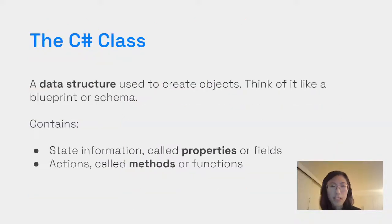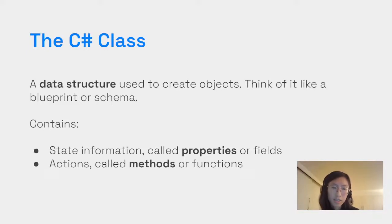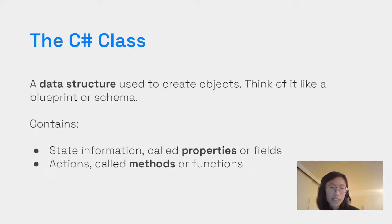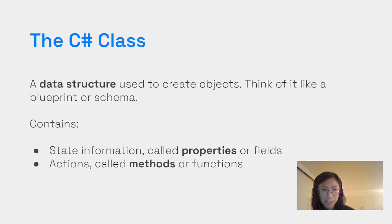The C# class is essentially a data structure used to create objects. We can think of it as a blueprint or schema. The class will contain state information that we call properties and actions that we call methods.